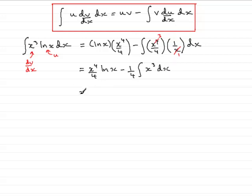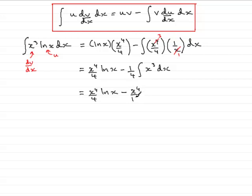Carrying on and integrating this part, we copy down the first term, and now integrating x cubed gives x to the power 4 over 4. Multiplied by the quarter out front, we have x to the power 4 over 16. Don't forget the constant C of integration.